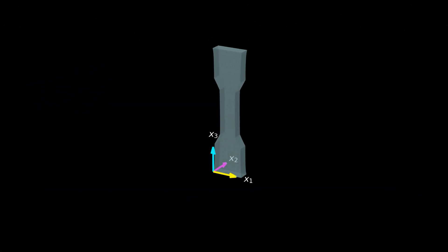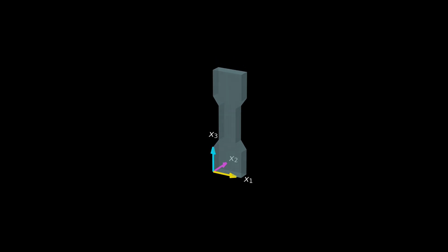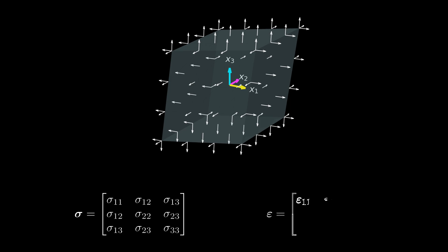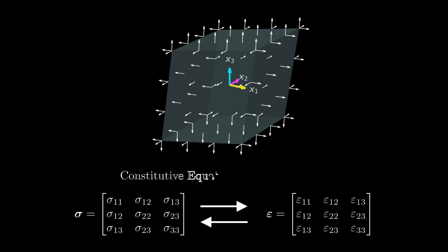If we want to simulate the mechanical behavior of matter, we have to somehow come up with a relationship between the stresses and strains in the material. If a certain stress is acting on a tiny volume element, we want to know how much the element deforms, and vice versa — if an element is deformed, we want to quantify the stresses acting on it. Such a relation between stresses and strains is called a constitutive equation or material model.